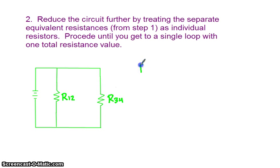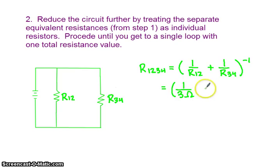So we can find the total resistance for this entire circuit, which I would call 1, 2, 3, 4, by combining R12 and R34, because they're in parallel with one another. We would take our value for R12, which would be 3 ohms, so we would have 1 over 3 ohms,